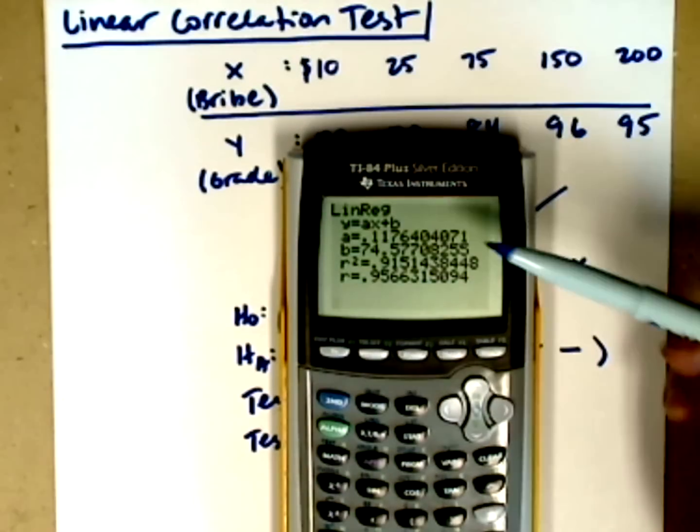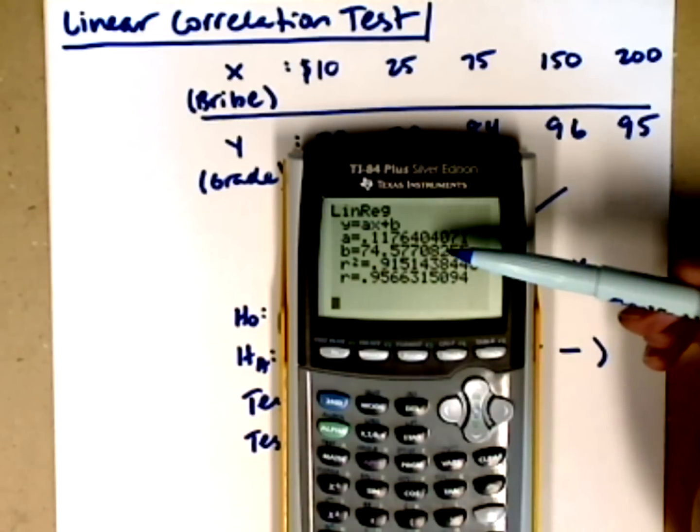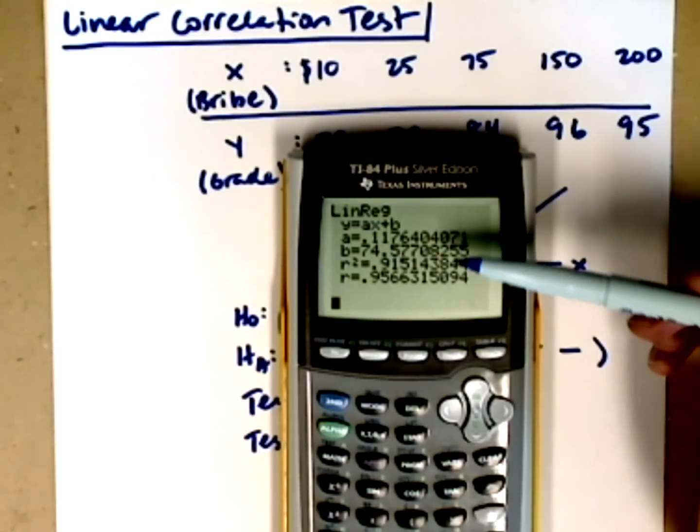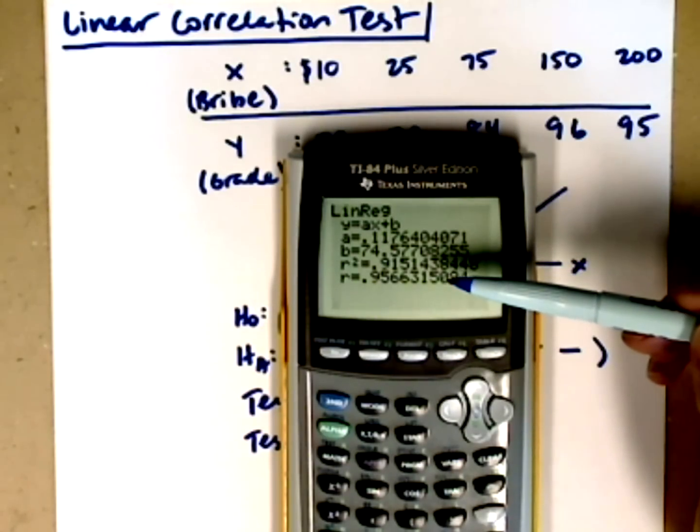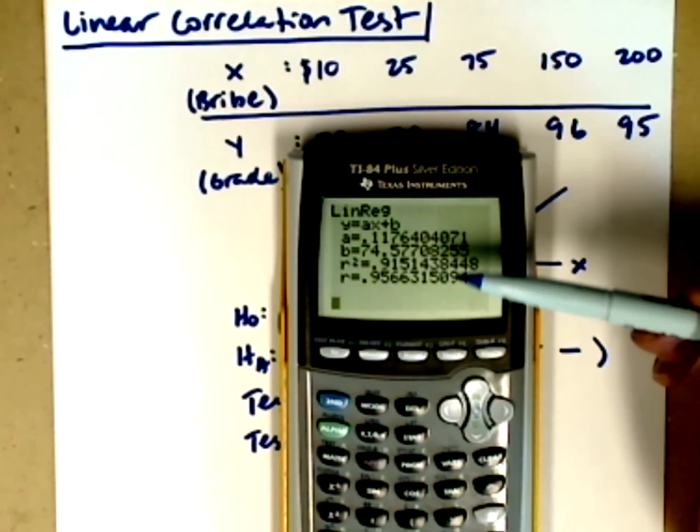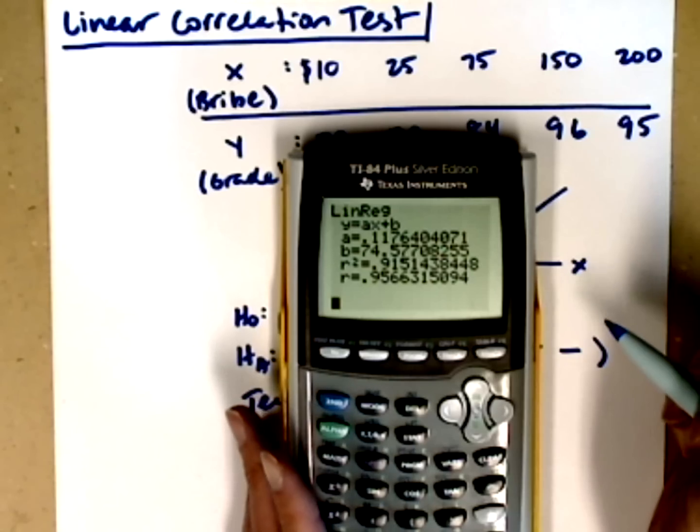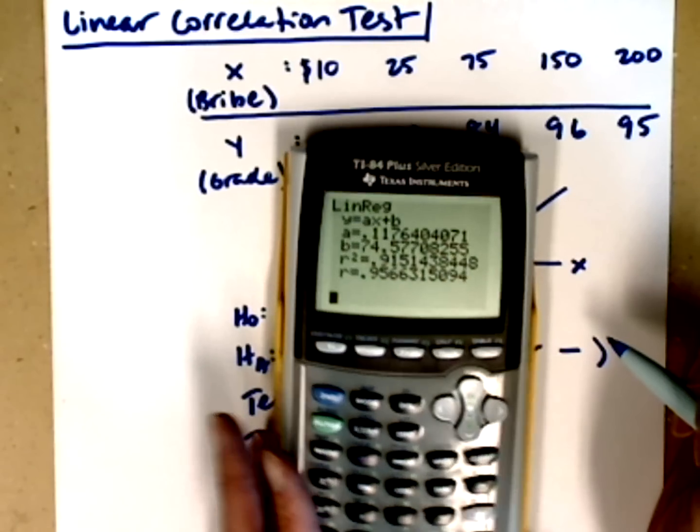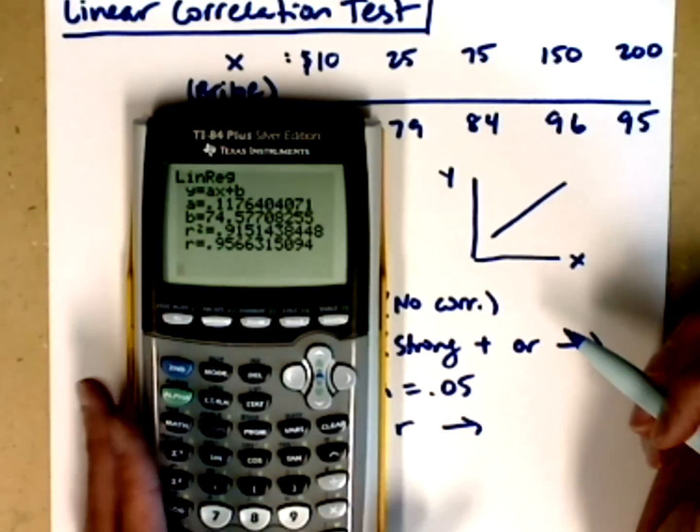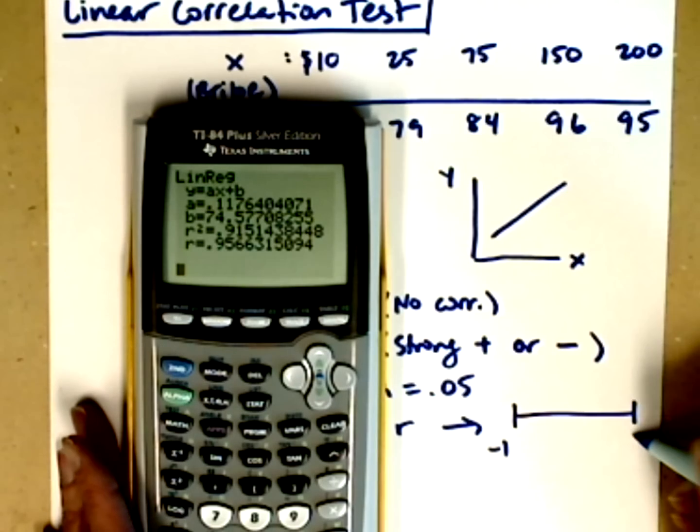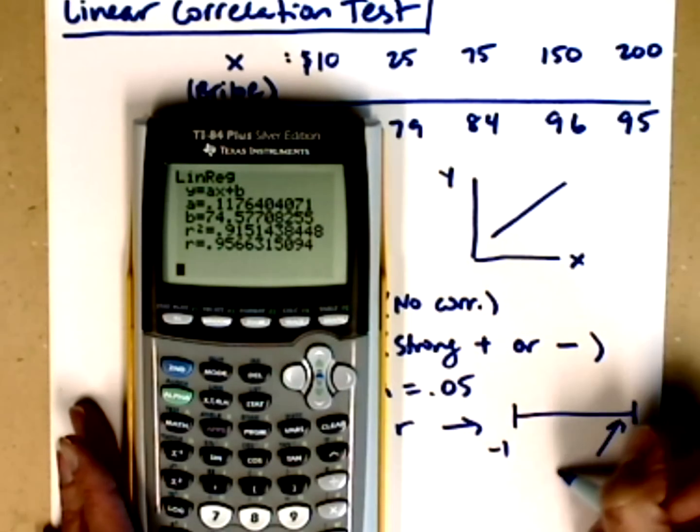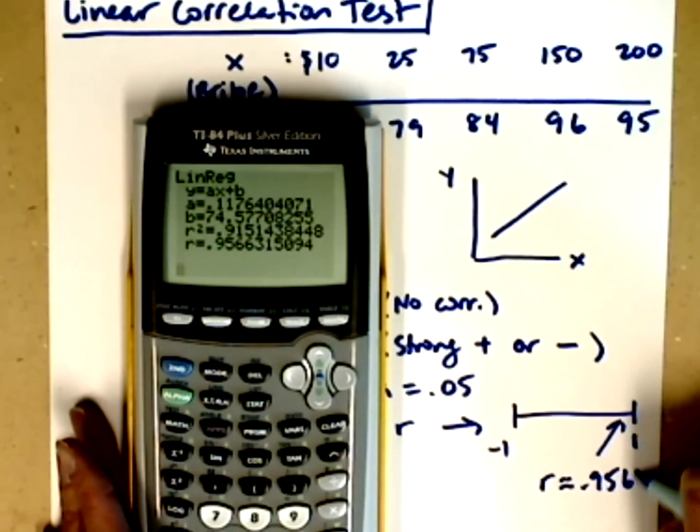What it does is it returns the values for A, which would be the number in front of x on my equation, my B value, which would be the y intercept, and then my correlation coefficient. We're going to use R, not R squared. So R is .9566. That looks like it's fairly strong. Remember that these correlation coefficients can only range between negative 1 and positive 1. So in our scale here between negative 1 and positive 1, we are at an R value of about .9566.